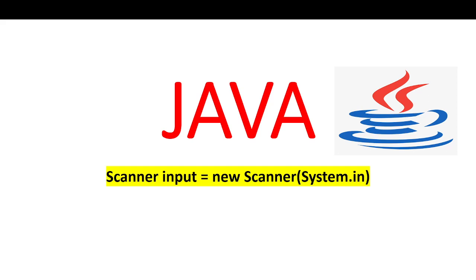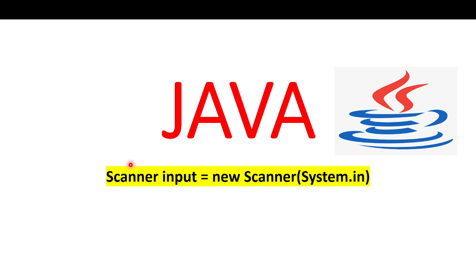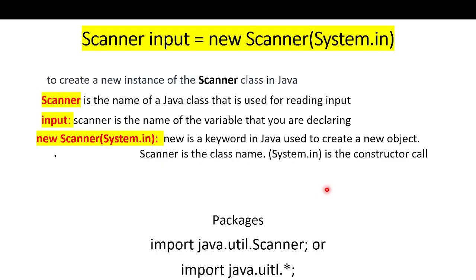In this video we will discuss how to read input from a user. For this we have a keyword or class name called Scanner. We need to first create one object - the class name, then the object name, then the new keyword to create a new object. Inside the Scanner class we use System.in. System.in reads from the computer keyboard. This is the general format for getting input from the user.